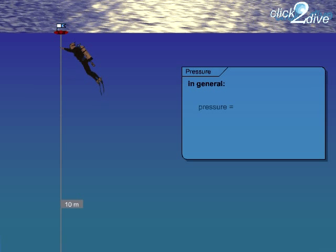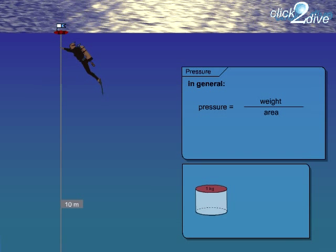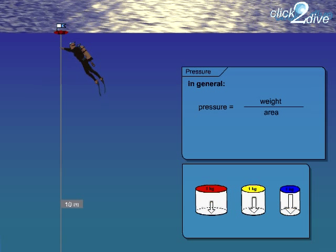In general, pressure is determined by the weight caused by a body affecting a certain area. The smaller the area affected by the load, the higher the pressure, and vice versa.